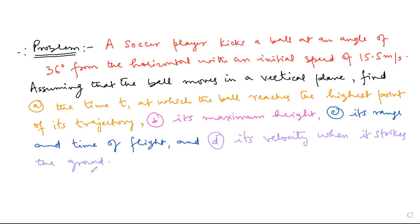Assuming that the ball moves in a vertical plane, find: Part A, the time T1 at which the ball reaches the highest point of its trajectory. Part B, its maximum height. Part C, its range and time of flight. Part D, its velocity when it strikes the ground.